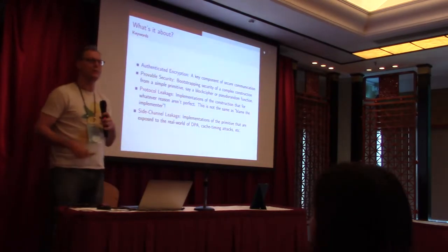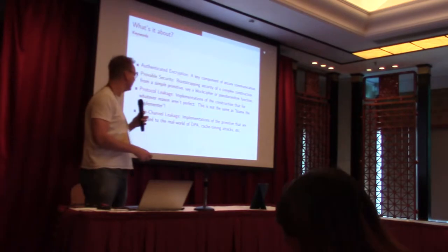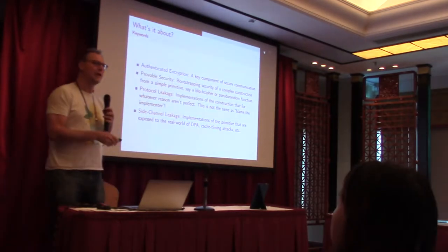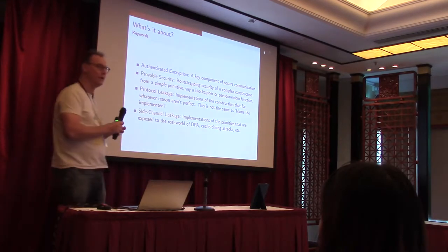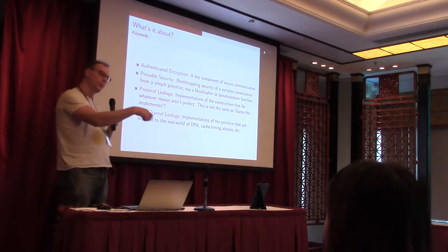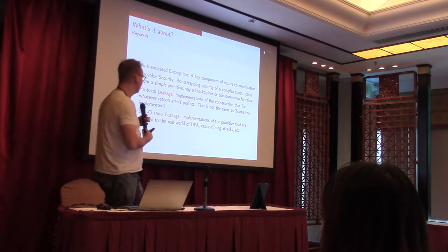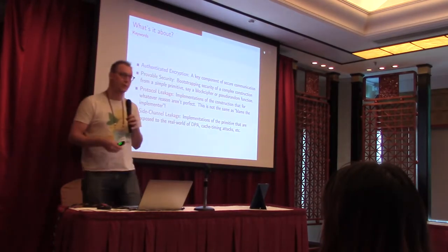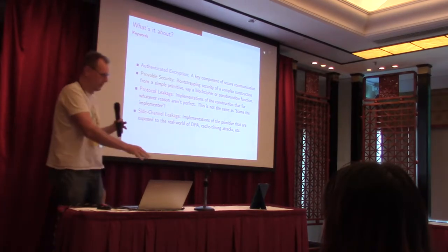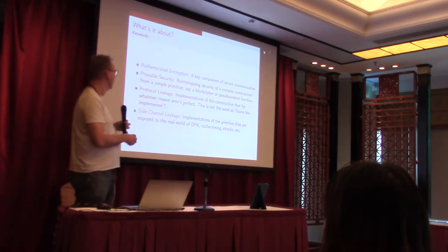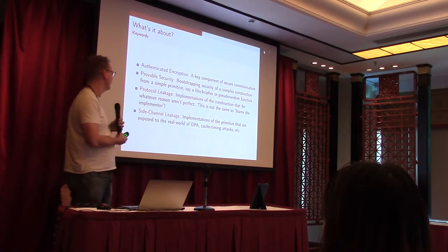Let's first start to deconstruct the title a little bit. This is about authenticated encryption, which is a key component in secure communication, and we're going to look at it from a provable security angle. What we're trying to do is to bootstrap security of a complex primitive — because authenticated encryption is not at the lowest level — from a more simple primitive, for instance a block cipher or a hash function.